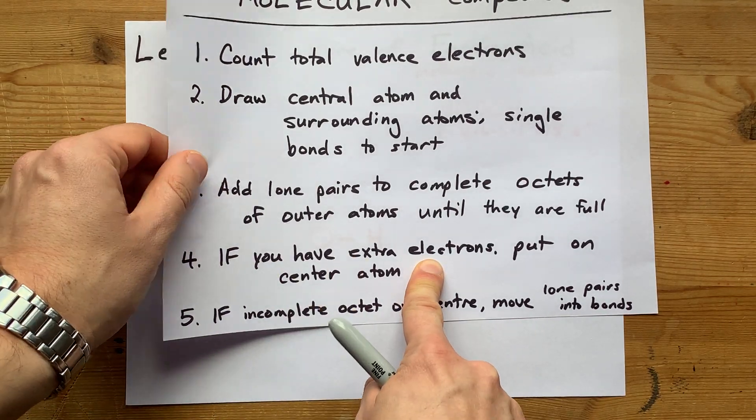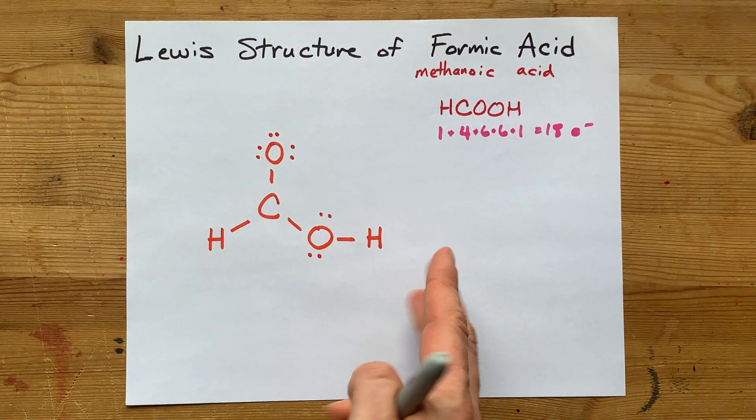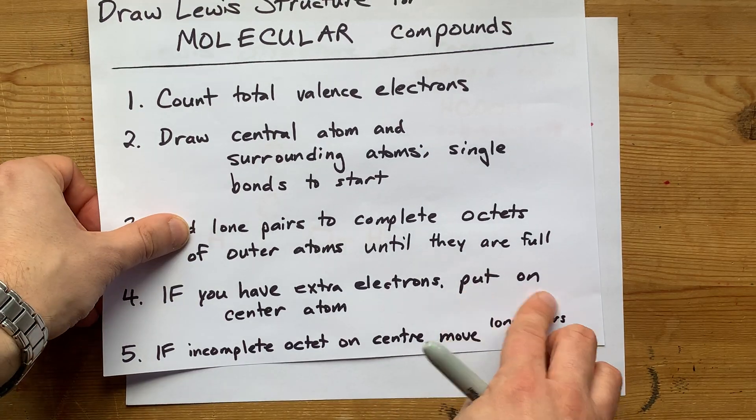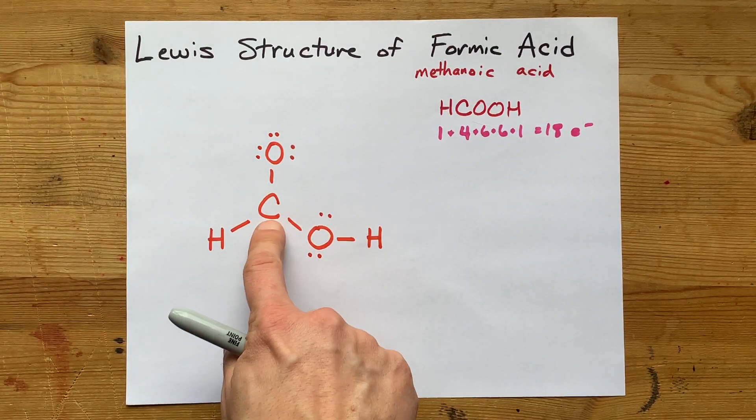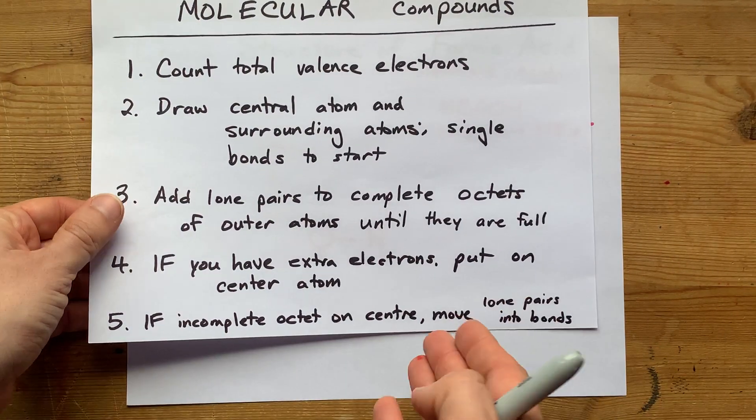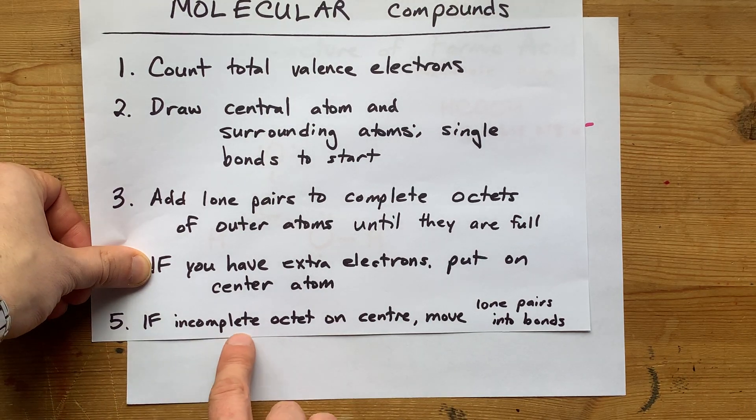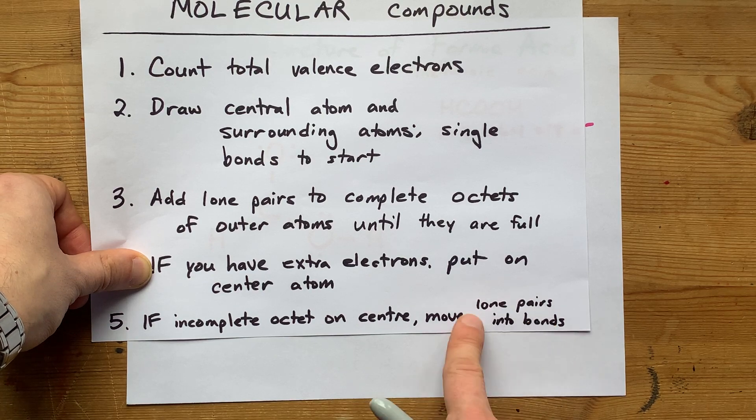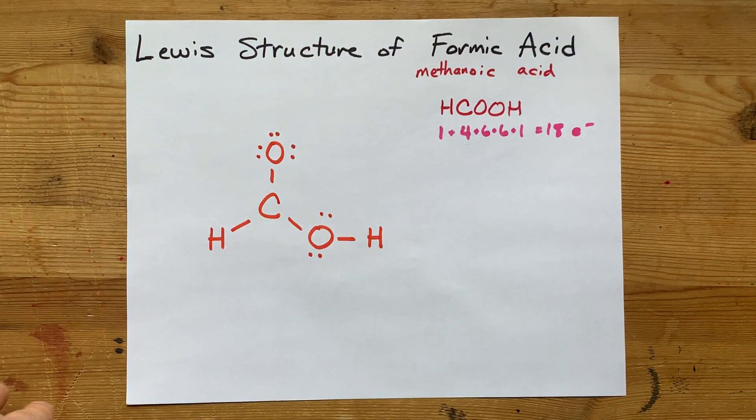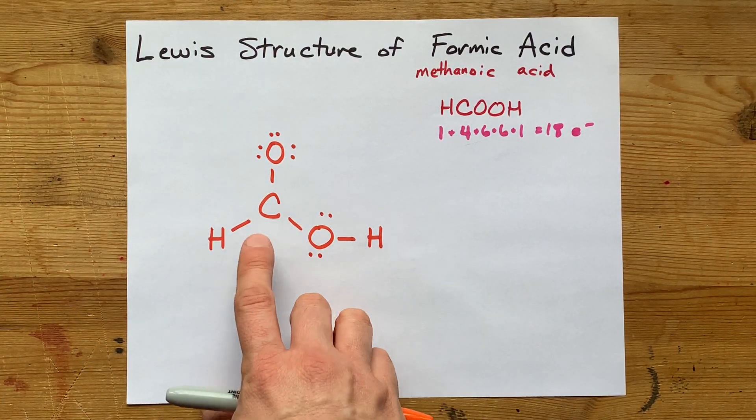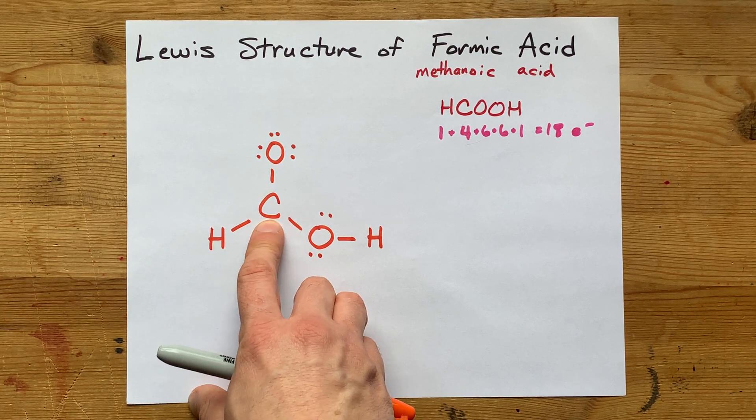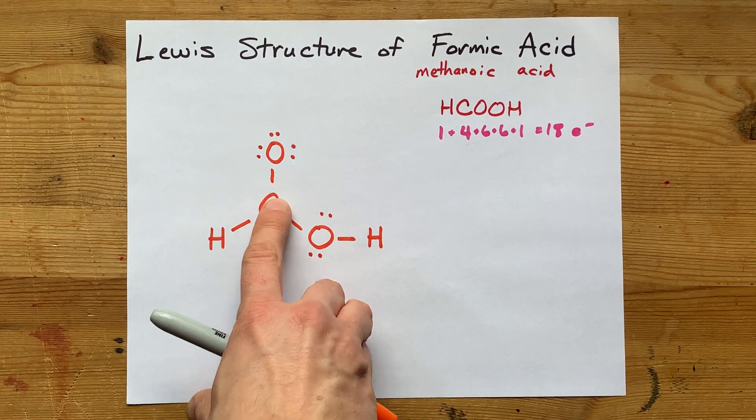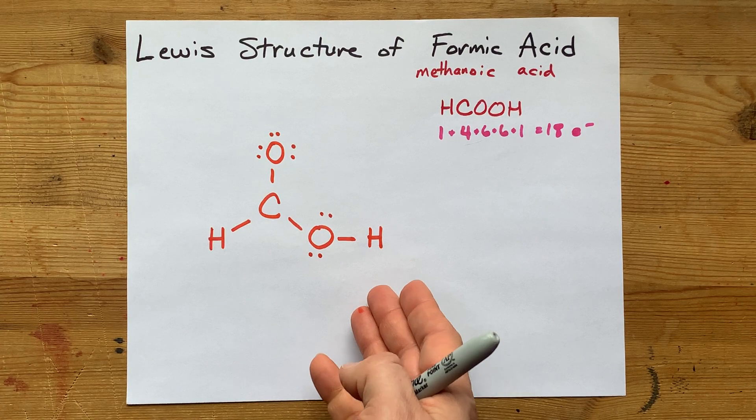If you have extra electrons, which we don't, we used up all 18 already, I would dump those onto the central atom, but I don't have any, so I can't do that. Now, if there's an incomplete octet on the central atom, we're going to move lone pairs from the outer atoms into double and triple bonds until it is happy. That central atom carbon is surrounded by six electrons so far. It needs to satisfy the octet rule to have eight electrons around it.